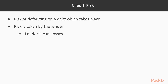What is credit risk? We've been using this term since the start of this section. The standard definition of credit risk is the risk of defaulting on a debt, which takes place due to the borrower failing to make the required debt payments in time. This risk is taken by the lender, since the lender incurs losses of both the principal amount as well as the interest on it.